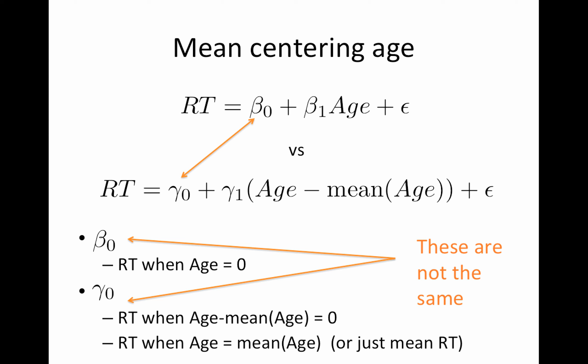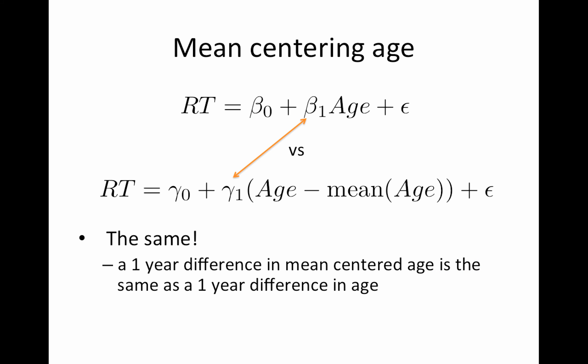So conclusion: beta naught and gamma naught are not the same. How about beta 1 and gamma 1? They are the same because this is simply a slope. Remember, a slope is a rate of change, how reaction time changes for a change in age, and a change in age is the same as a change in mean centered age. A one-year difference in mean centered age is the same as a one-year difference in age.